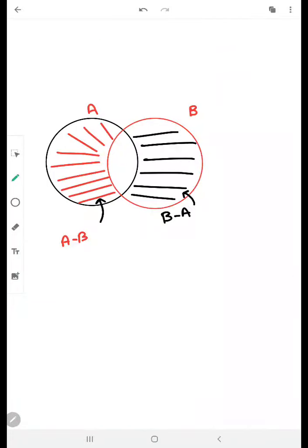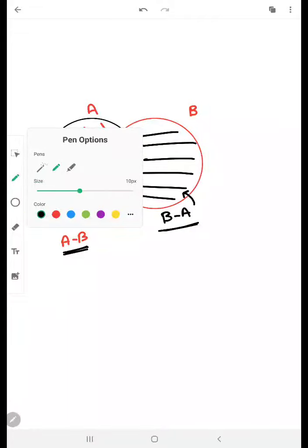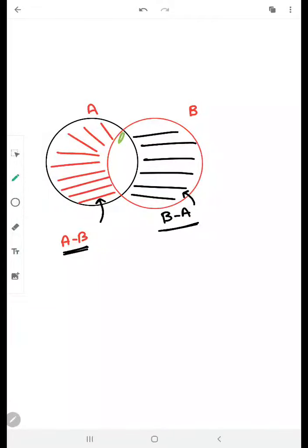Next comes A-B, difference of two sets, A-B or B-A. Suppose you have two sets which have few elements in common. The few elements in common are represented by this area.